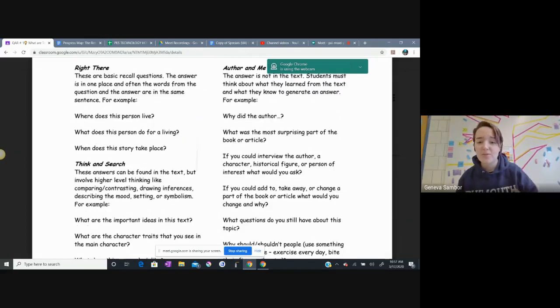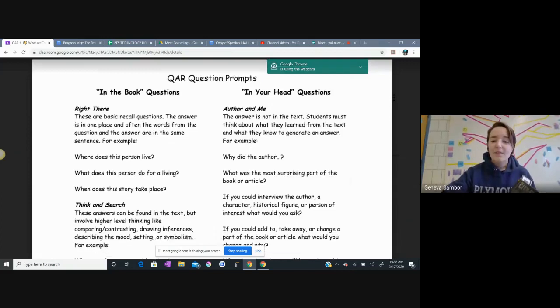The third type is author and me. This one is not in the text. So you would put the book away for this one, right? Maybe you would glance at it, but the answer is not necessarily in the book. You would say something like for this question, what is the most surprising part of the book so far for you, right? If you could interview this character, maybe take Dune, what do you think that he would say to some of your interview questions?